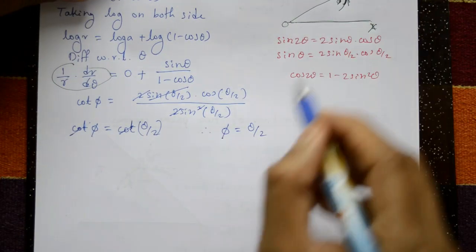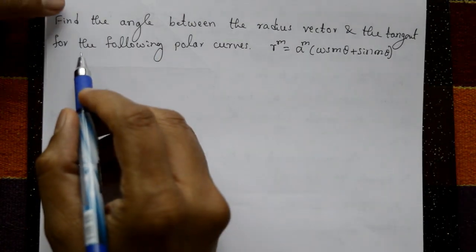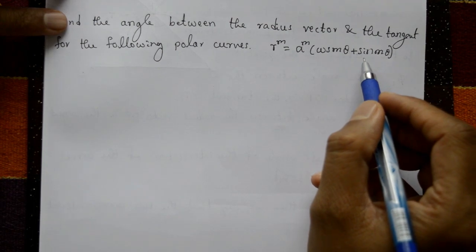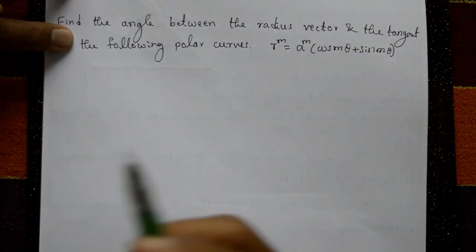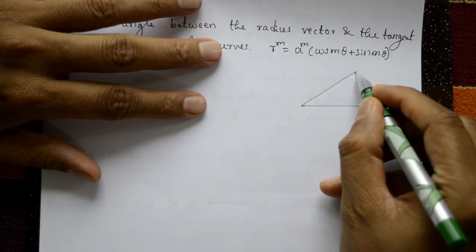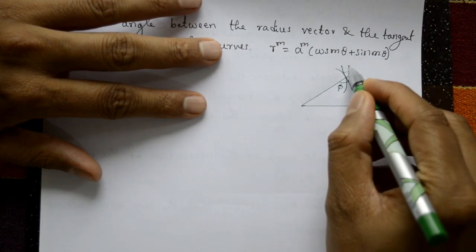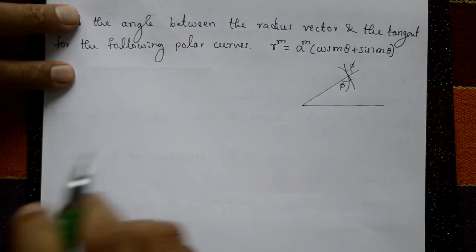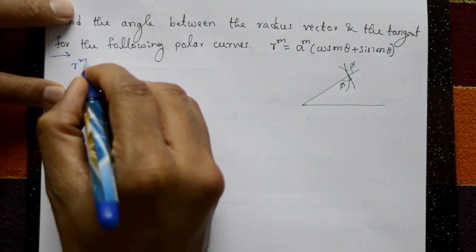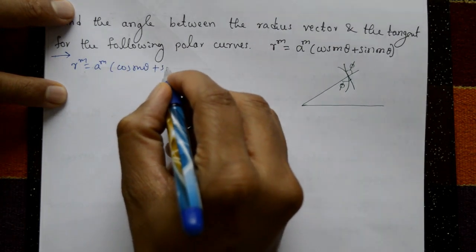Find the angle between the radius vector and the tangent for the curve r^m = a^m(cos mθ + sin mθ). In the diagram, the initial line, radius vector, curve, and tangent are shown. We need to find the angle ψ.